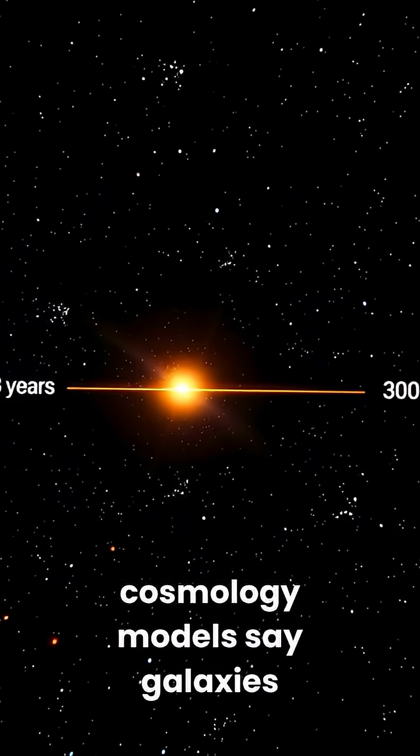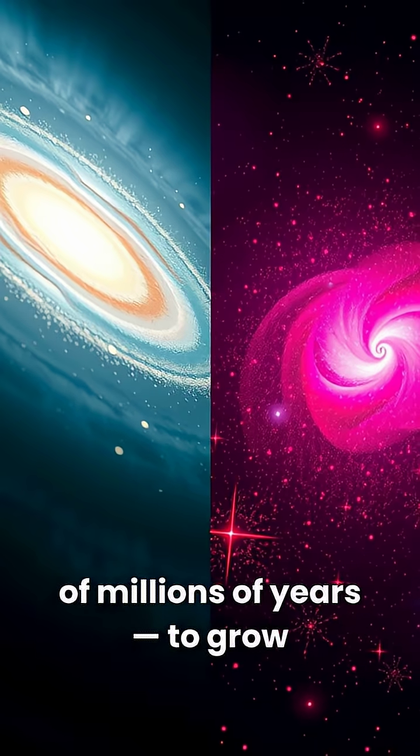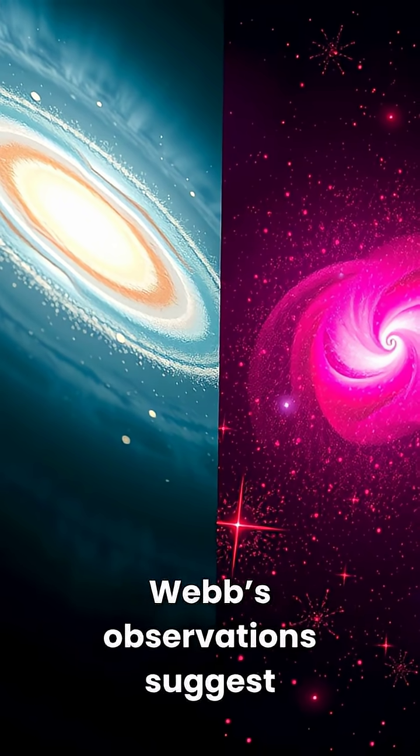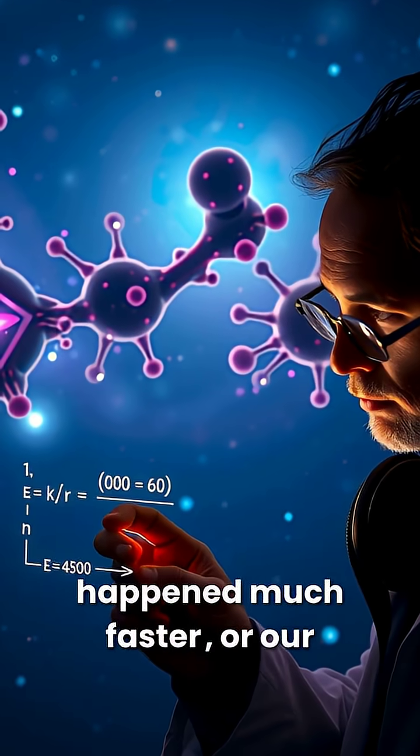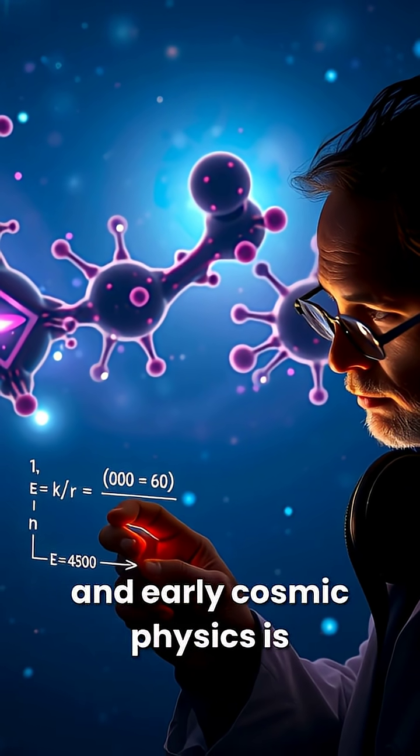Why it matters: our best cosmology models say galaxies need time, hundreds of millions of years to grow this large. Webb's observations suggest either star formation happened much faster, or our understanding of dark matter and early cosmic physics is incomplete.